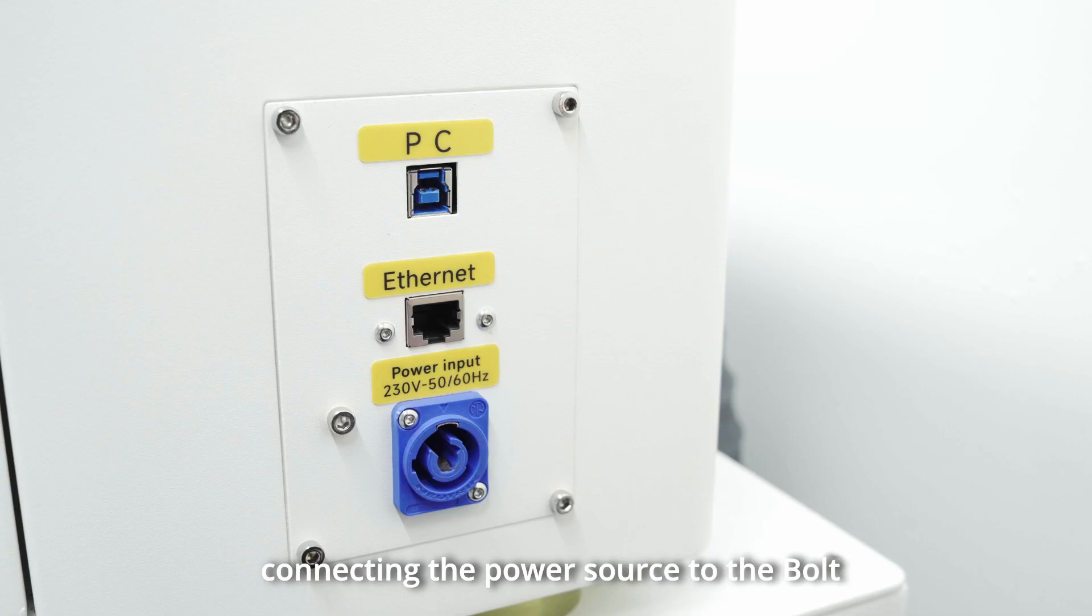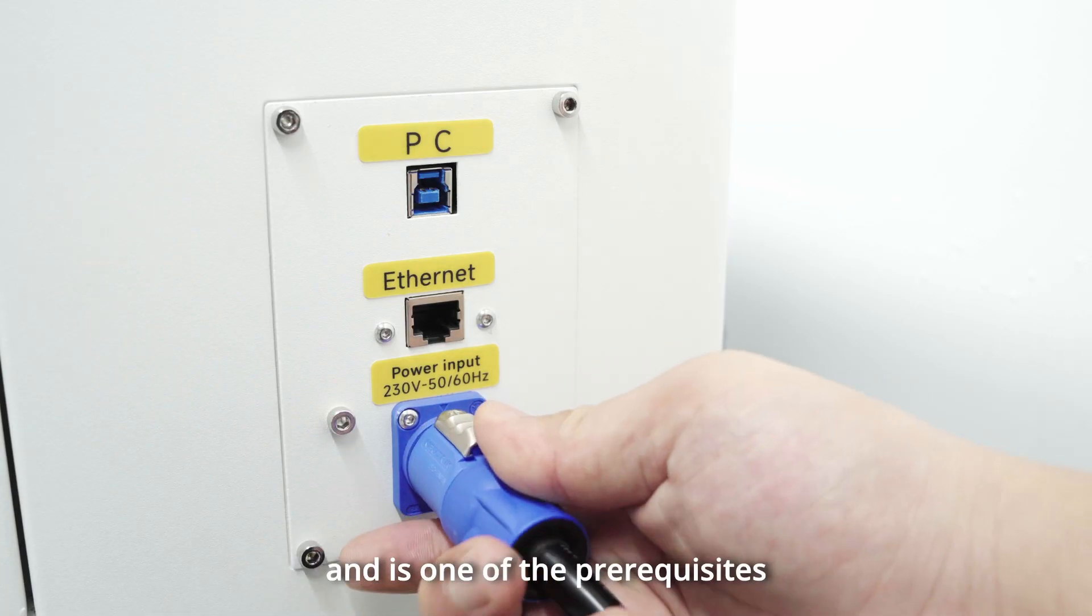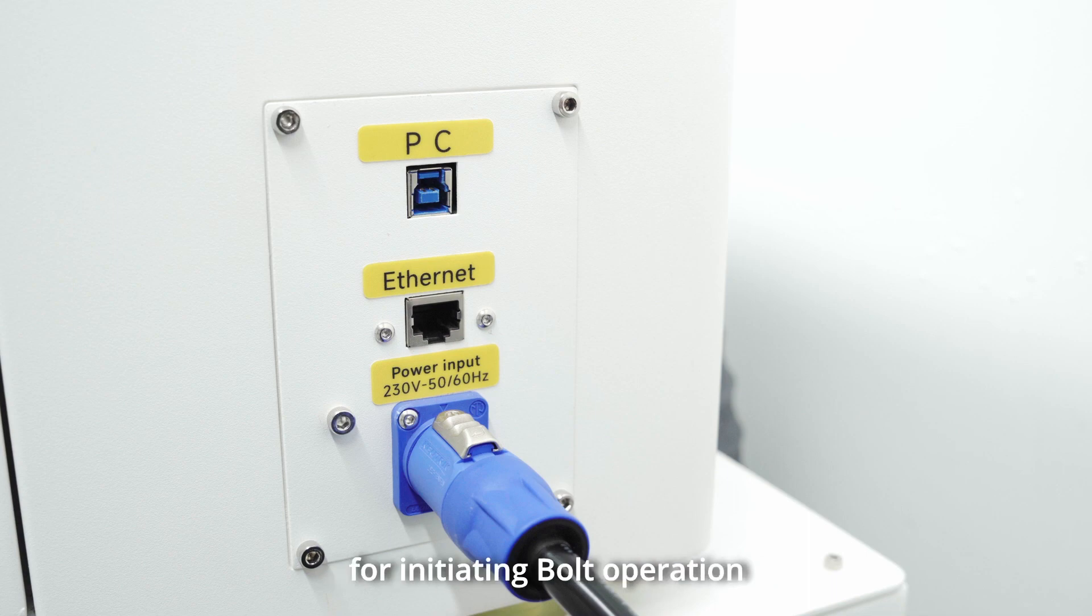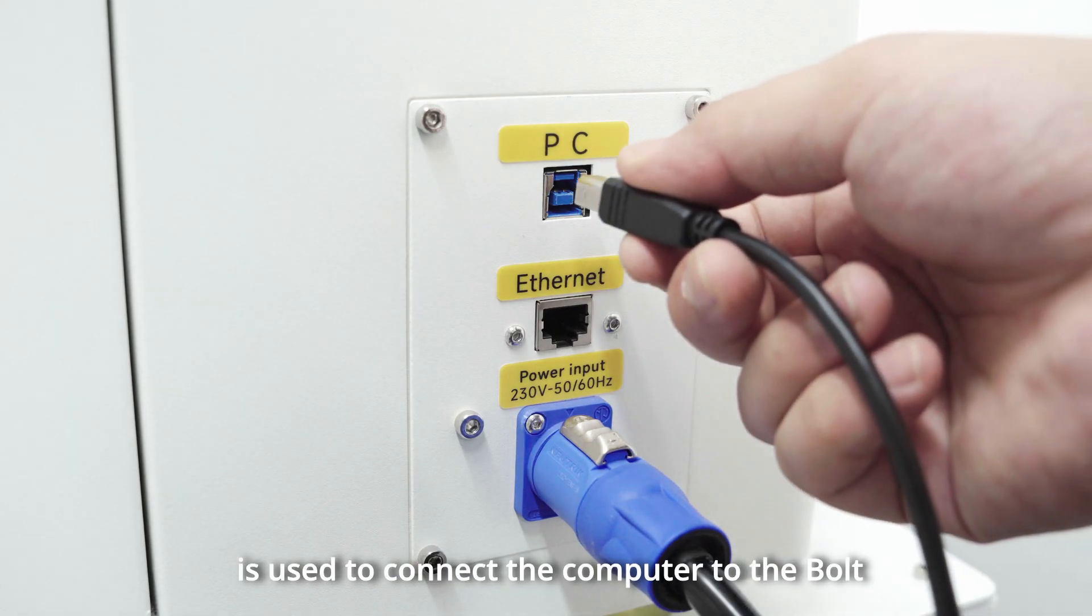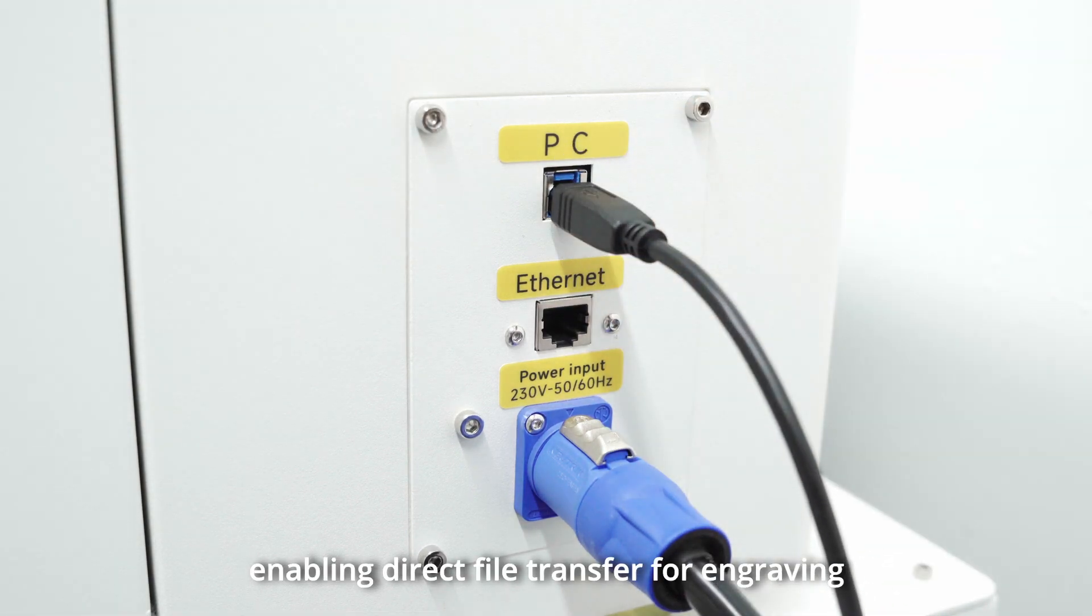The power cord is essential for connecting the power source to the bolt and is one of the prerequisites for initiating bolt operation. The USB PC cable is used to connect the computer to the bolt, enabling direct file transfer for engraving.